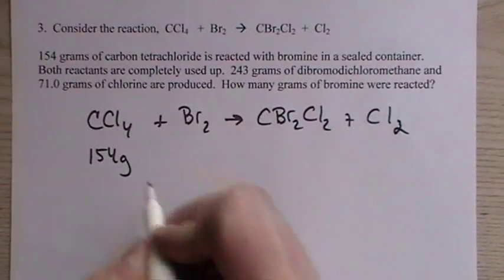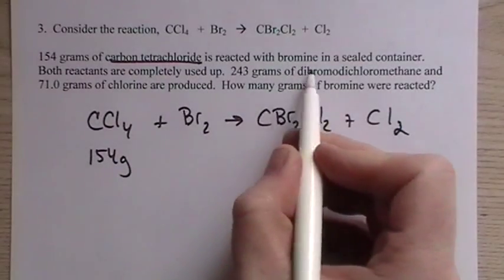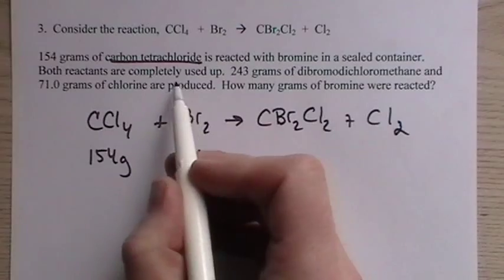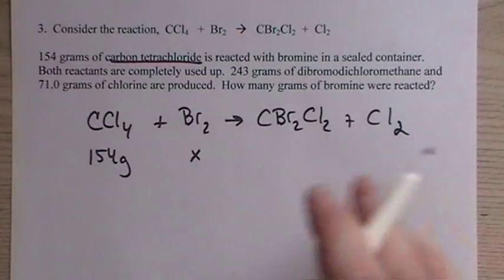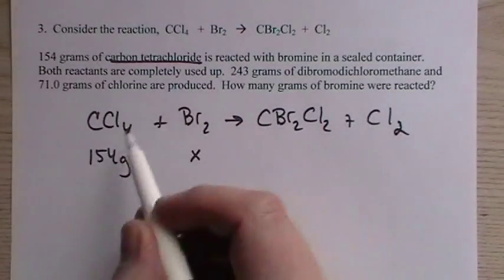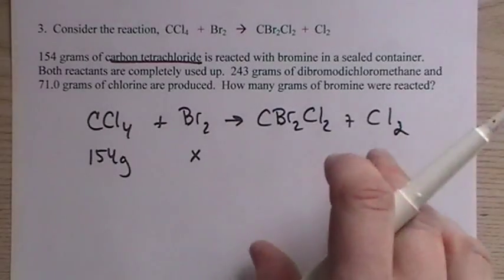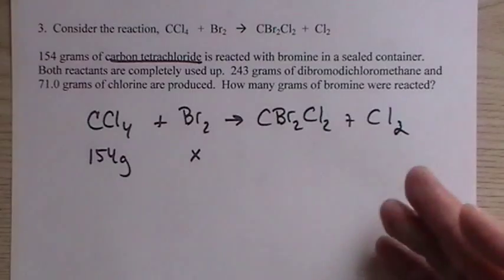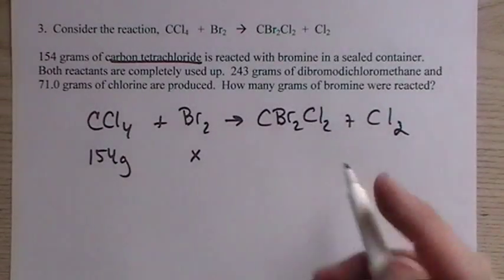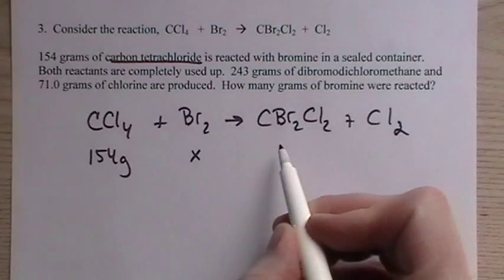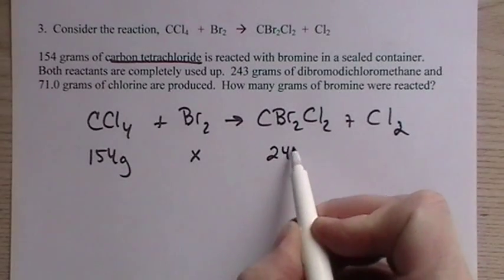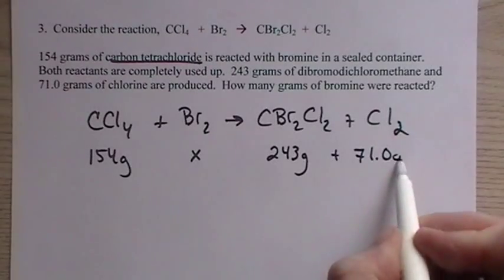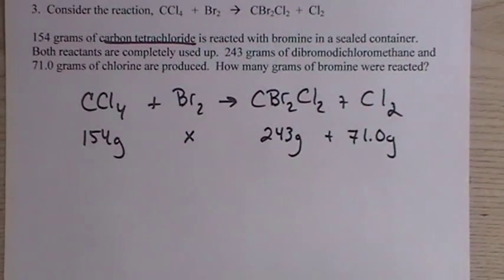So, 154 grams of the carbon tetrachloride is reacted with bromine. They don't say how much, so that must be our X. Both reactants are completely used up. That's important, so there's nothing left over. So, the mass of reactants is converted all the way over to products, and so that will be the same, equal the same mass as the original reactants. 243 grams of dibromodichloromethane. It goes right here. And then, it's 71 grams of chlorine.